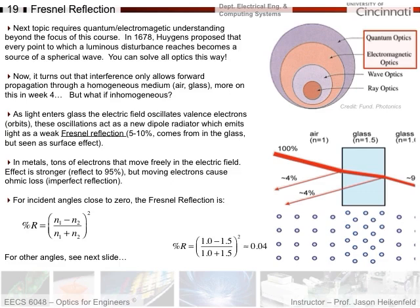The reason you get Fresnel reflection is related to Huygens' Principle. When light's electric field hits an atom, it causes the electron cloud to oscillate, and moving charge can create a photon. In a medium with the same refractive index, interference forces things to keep moving forward. However, when you go from one refractive index to another, you break the symmetry of this system and get a little bit of the light re-radiated backwards — that's Fresnel reflection.